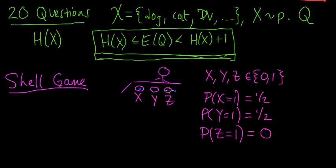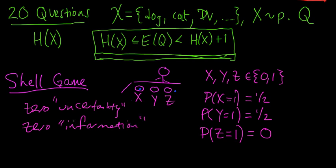In other words, another way to put that is, we have zero uncertainty about this random variable. And so that's zero uncertainty in quotes. Or we gain zero, we gain zero information in quotes. Just intuitively. We gain nothing by asking this. On the other hand, if we ask, is it under X? We certainly get some information.